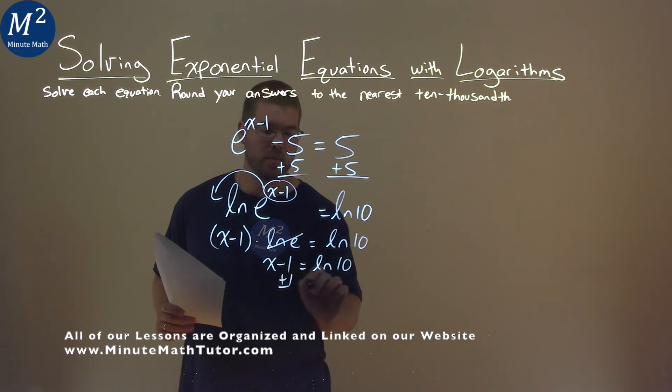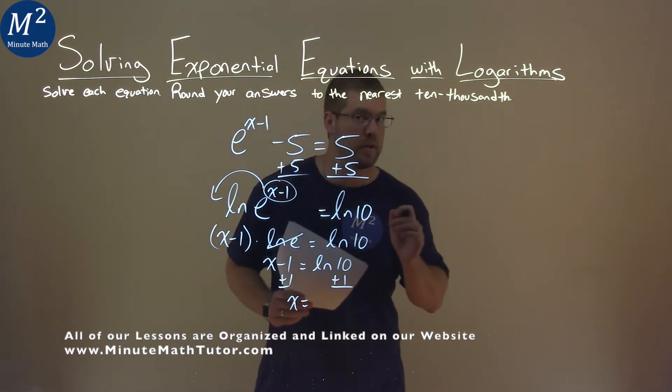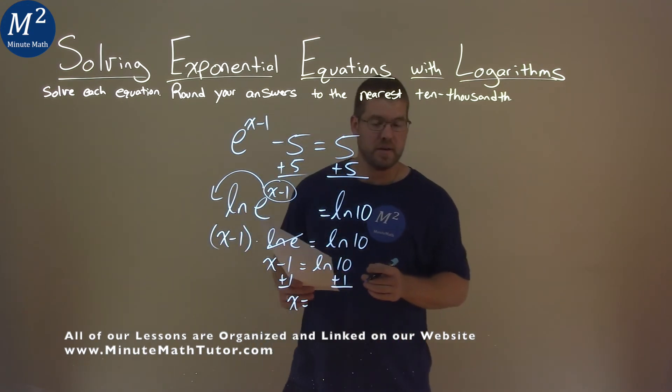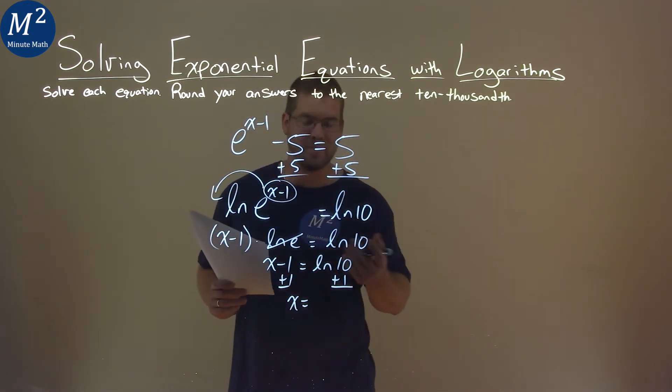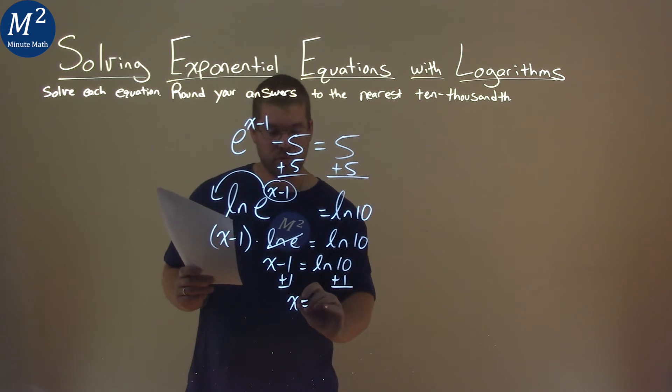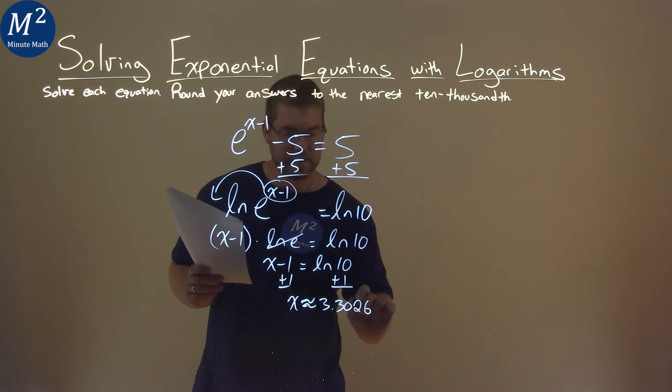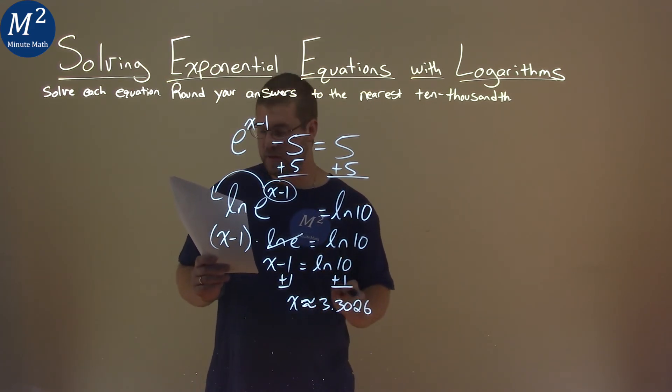I add 1 to both sides, and I'm left with x equals natural log of 10 plus 1. Let's use our calculator here, mainly because of natural log of 10. And that comes out to be approximately, because we're going to round it, 3.3026. So again, natural log of 10 plus 1 is 3.3026 rounded.